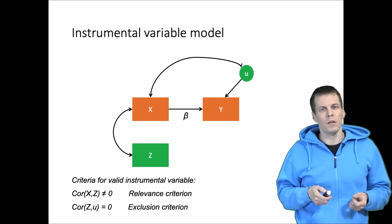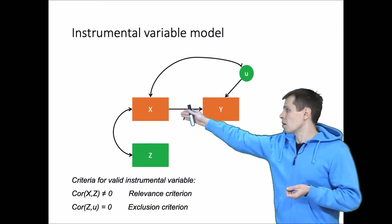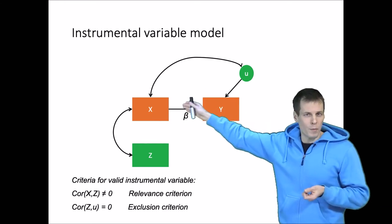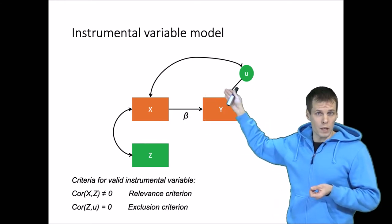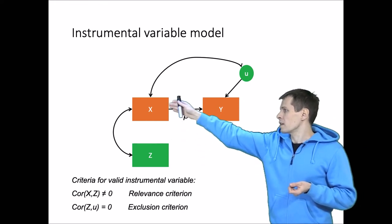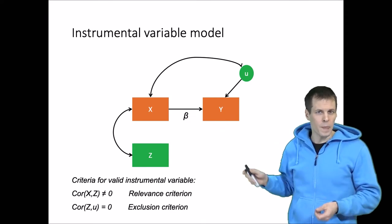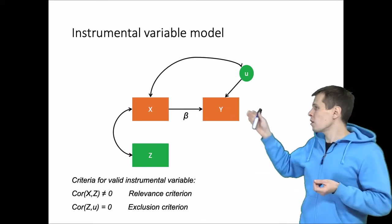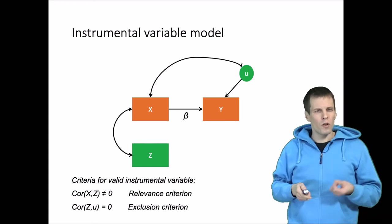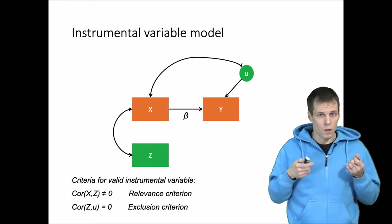The key problem here, the endogeneity problem, is that X and U are correlated. So that is the problem that you want to deal with using instrumental variables, and you include the instrument Z to estimate this X-Y relationship consistently. The problem is that we don't really observe U, so we don't know whether X and U are correlated. That is something that we have to infer based on theory.